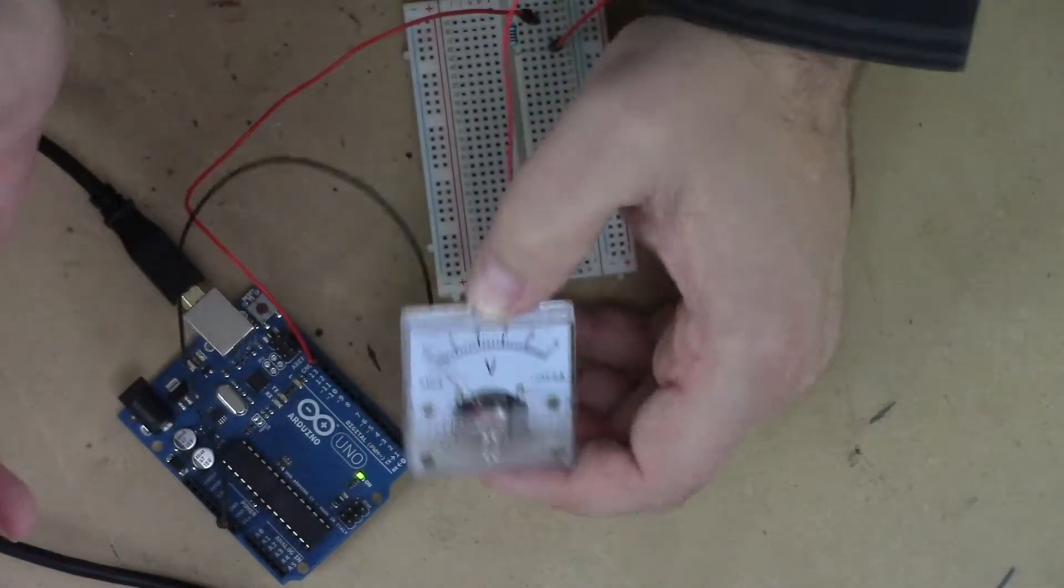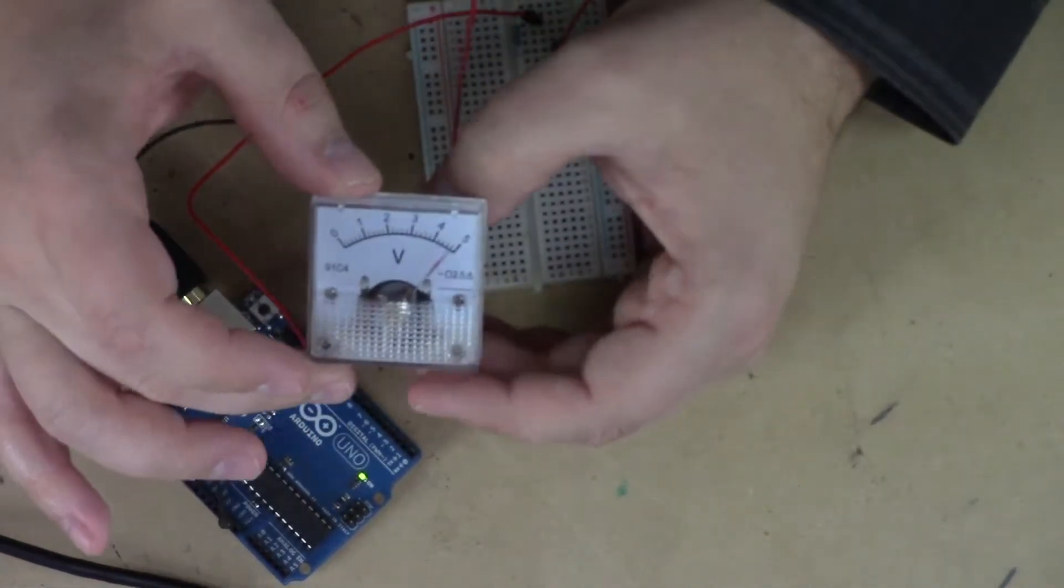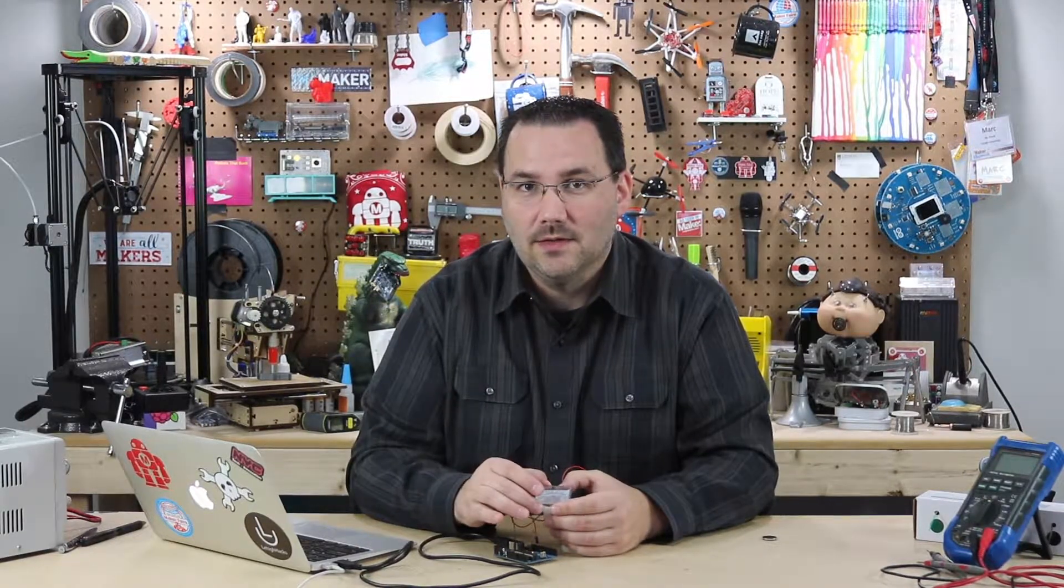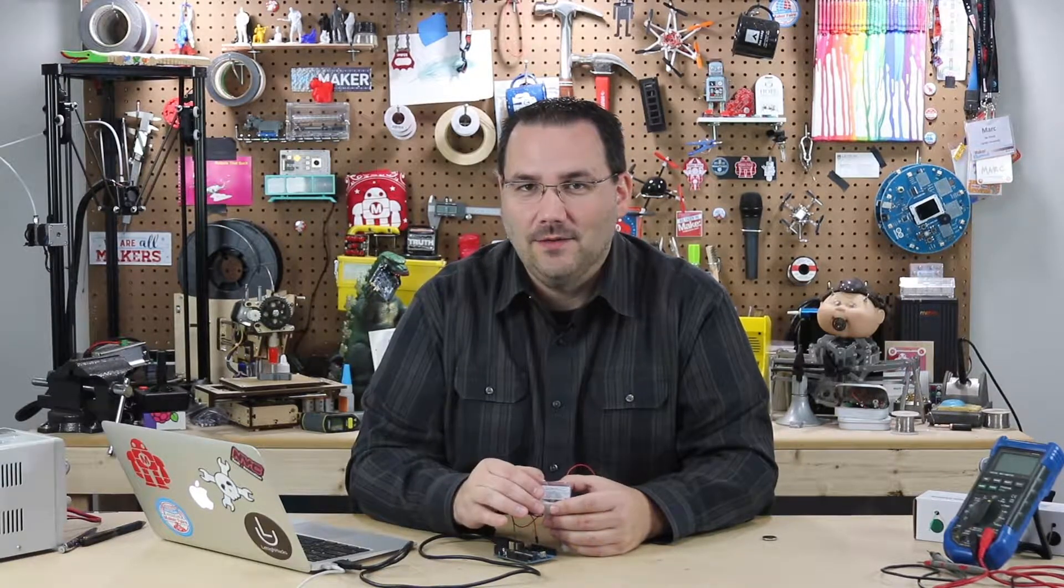Now what I want you to do is think about how you can control this so that the needle goes anywhere on this scale. Go ahead and pause the video. I'll give you a hint. Look at some of those examples, and when you figure it out, or if you don't figure it out, come back and I'll show you how to do that.